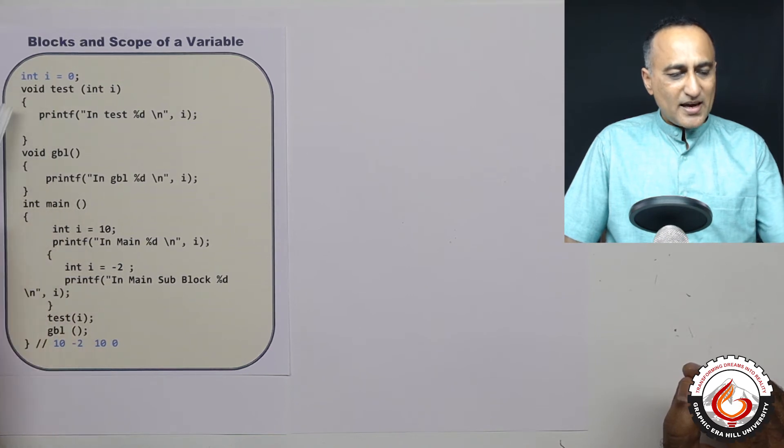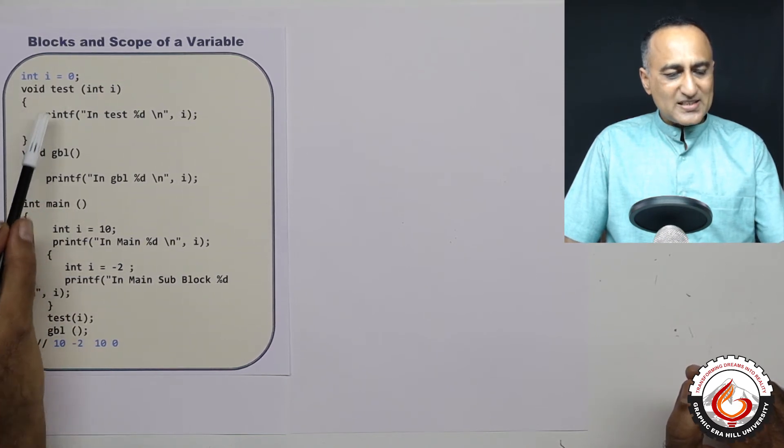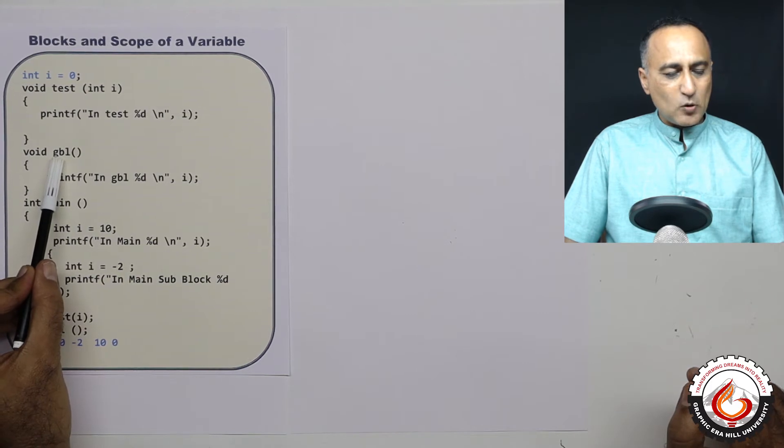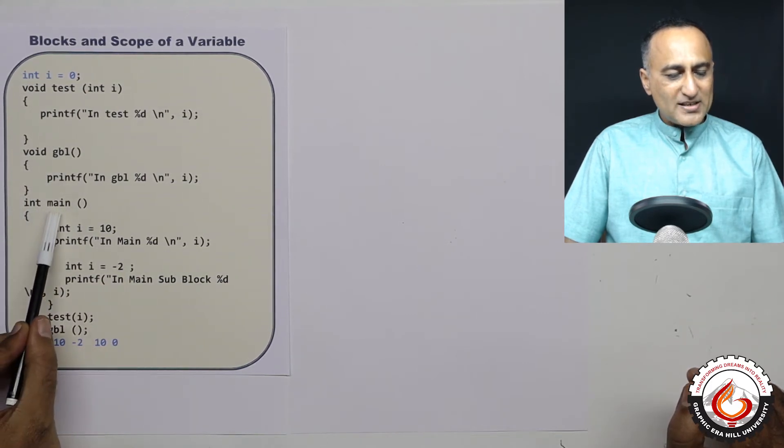Then I have a function called test, I have a function called GBL or global, then I have a function called main.